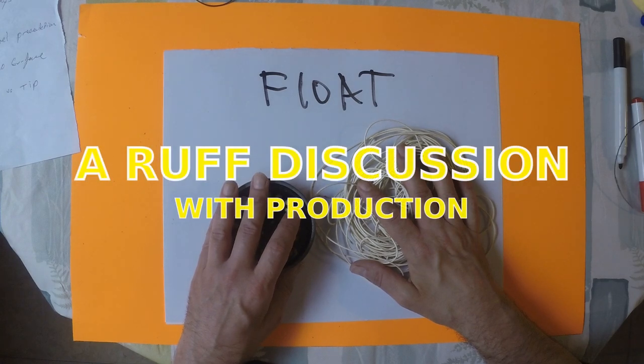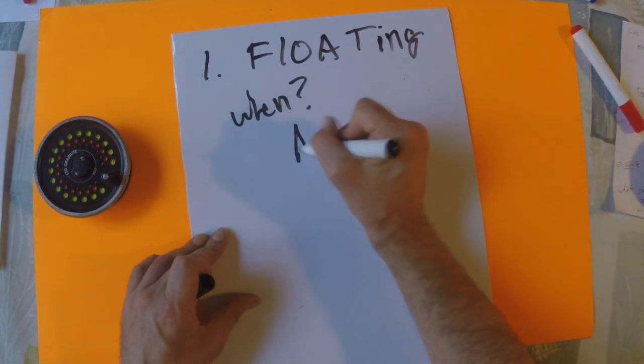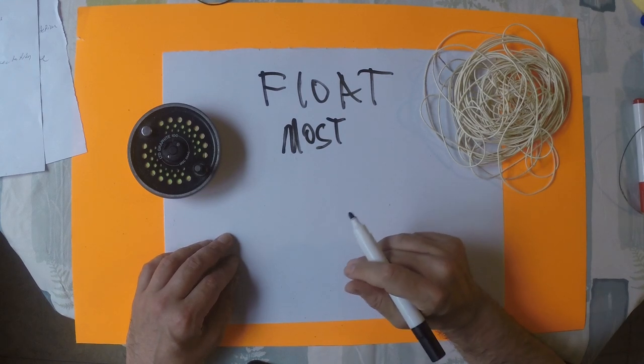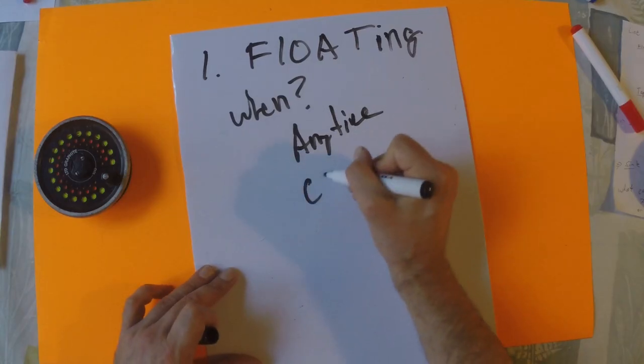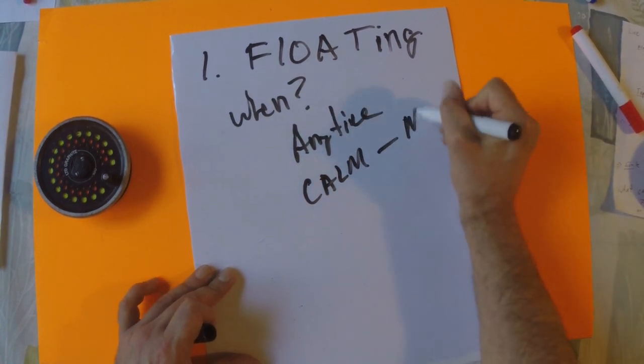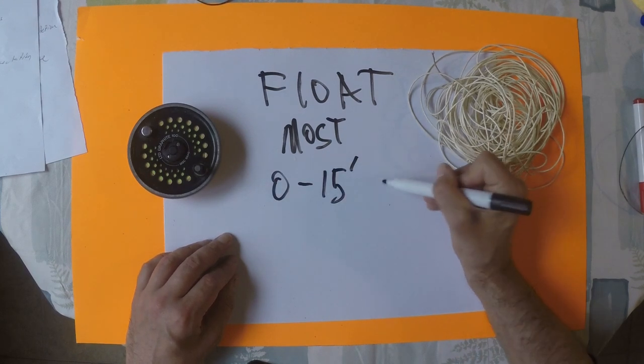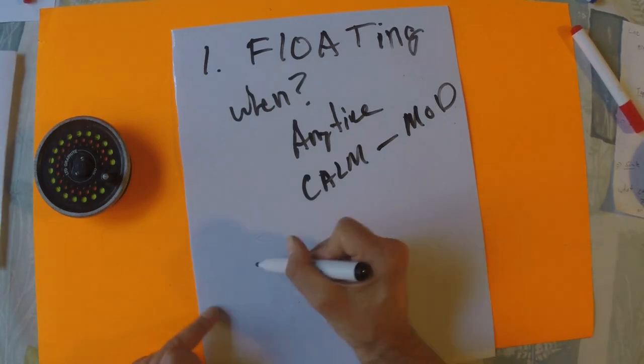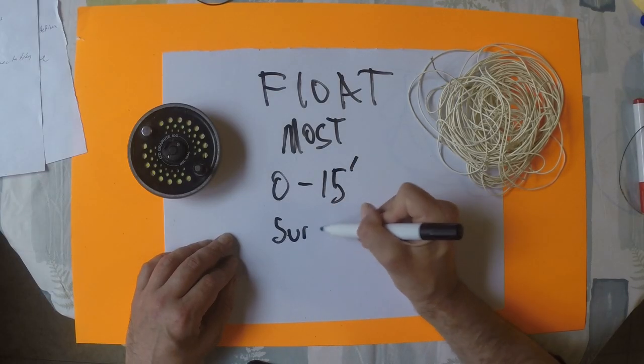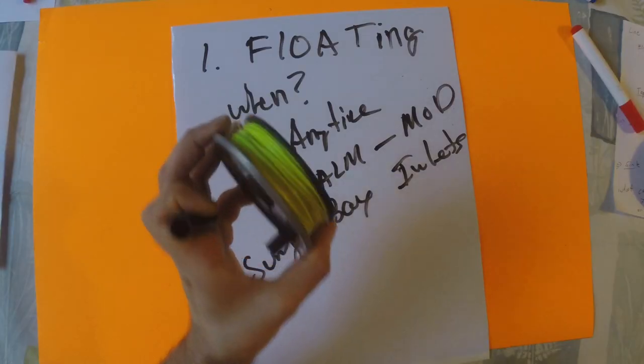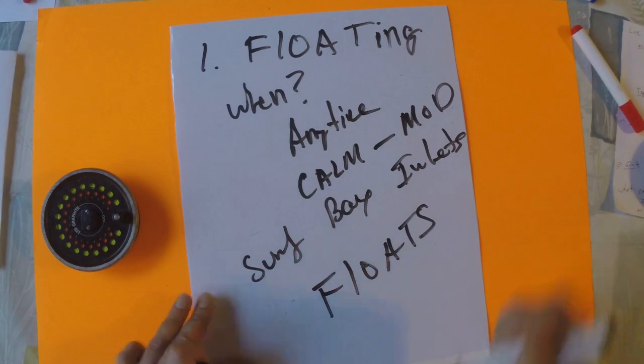We're going to talk about the floating line. When am I going to use my floating line? I'm going to use it anytime I can. There's going to be days where it's extremely windy or choppy water or turbulent surf. In calmer to moderate conditions, I'm fishing between zero to 15 feet of water. You can throw it anywhere in the surf, in bays. Surface flies, you definitely want to be using a floating line. It just floats. That's the difference between floating and sinking line.